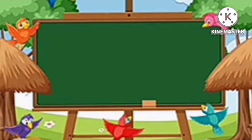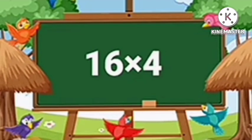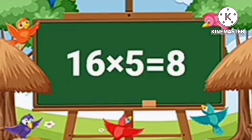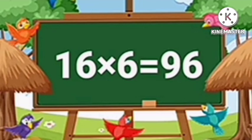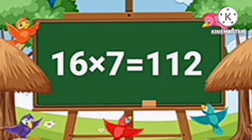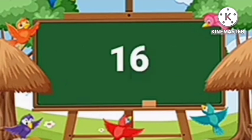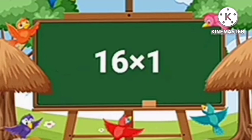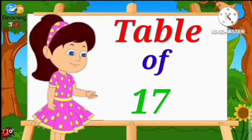Table of Sixteen. Sixteen ones are sixteen. Sixteen twos are thirty-two. Sixteen threes are forty-eight. Sixteen fours are sixty-four. Sixteen fives are eighty. Sixteen sixes are ninety-six. Sixteen sevens are one hundred twelve. Sixteen eights are one hundred twenty-eight. Sixteen nines are one hundred forty-four. Sixteen tens are one hundred sixty.